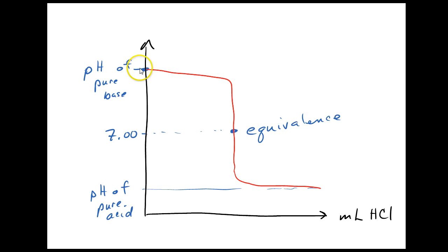It's going to start up here at the pH of the pure base, and then it's going to slowly descend as we add acid until we get to the equivalence point. And then it's going to plummet downward, hitting the equivalence point at a pH of 7. And then it's going to level out at the pH of the strong acid.